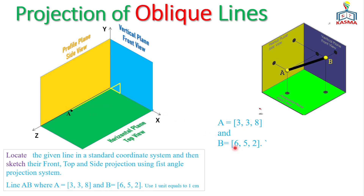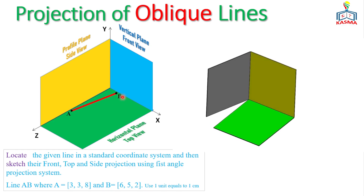For Point B, we apply the same procedure: measure 6 cm along the X-axis, 5 cm in the Y direction, and 2 cm in the Z direction. That intersection gives the location of Point B. Once both points are located, we connect them to get line AB on the standard coordinate system.